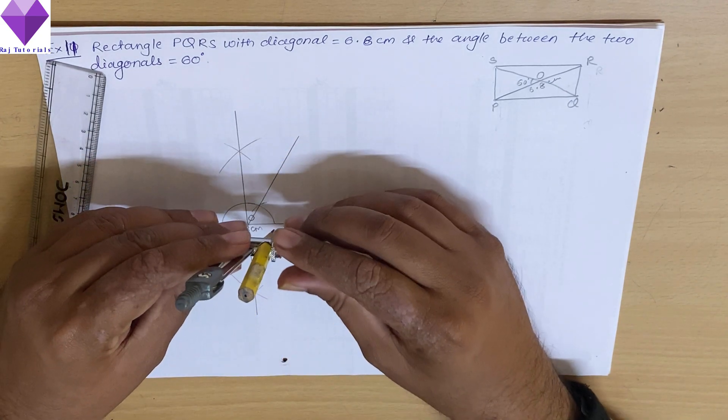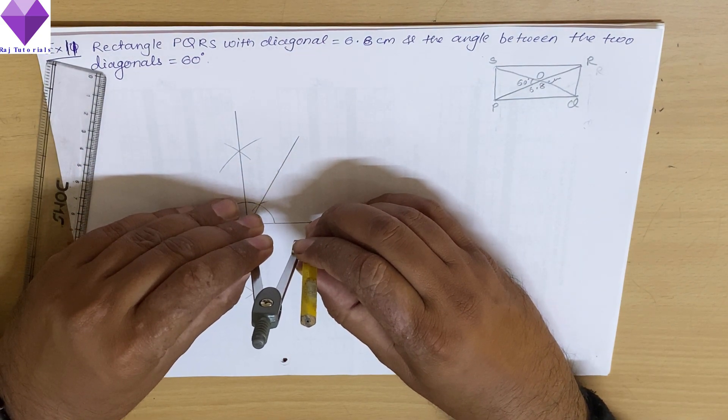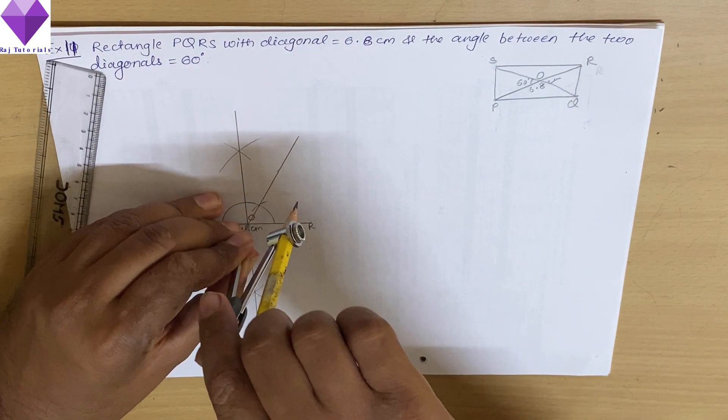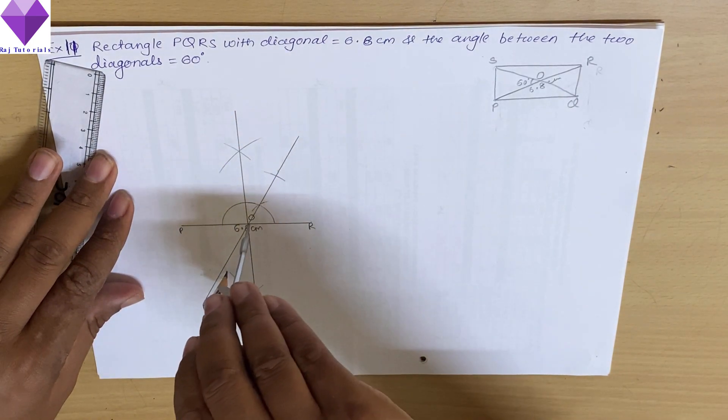Then I will measure the radius OR in the rounder, and with O as center on this new line, I will mark the points, two points on both the sides.